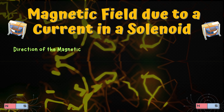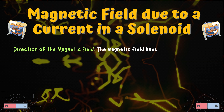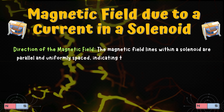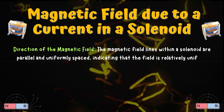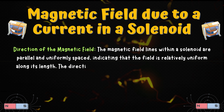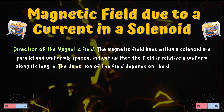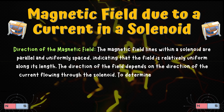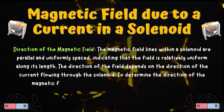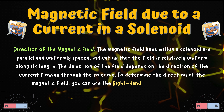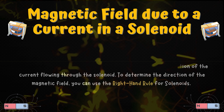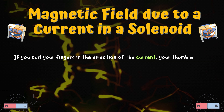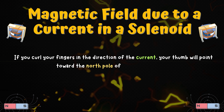Direction of the magnetic field. The magnetic field lines within a solenoid are parallel and uniformly spaced, indicating that the field is relatively uniform along its length. The direction of the field depends on the direction of the current flowing through the solenoid. To determine the direction of the magnetic field, you can use the right-hand rule for solenoids — if you curl your fingers in the direction of the current, your thumb will point toward the north pole of the magnetic field.